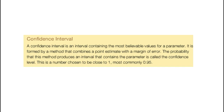Interval estimation: constructing an interval that contains the parameter. An interval estimate indicates precision by giving an interval of numbers around a point estimate. The interval consists of numbers that are the most believable values for the unknown parameter based on the observed data. An interval estimate is designed to contain a parameter with some chosen probability. Since these interval estimates contain the parameter with a certain degree of confidence, they are referenced as confidence intervals. This confidence is usually expressed as a percentage. If the interval was constructed using a confidence level of 0.95, we say that we have 95% confidence that the interval contains the parameter — a 95% confidence interval. We use the sampling distribution of the point estimate to construct the confidence interval, as this distribution tells us the probability that the point estimate will fall within any certain distance of the parameter.